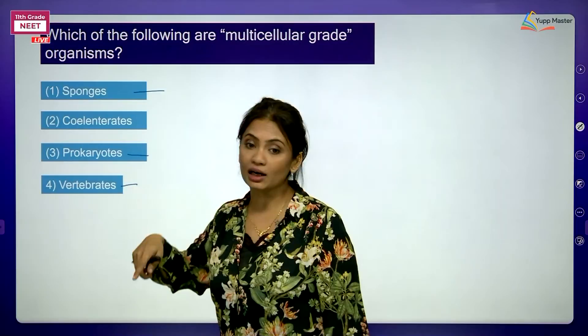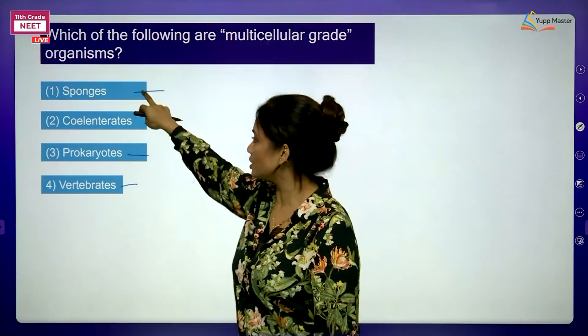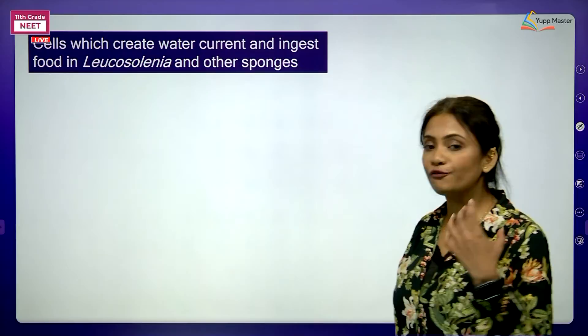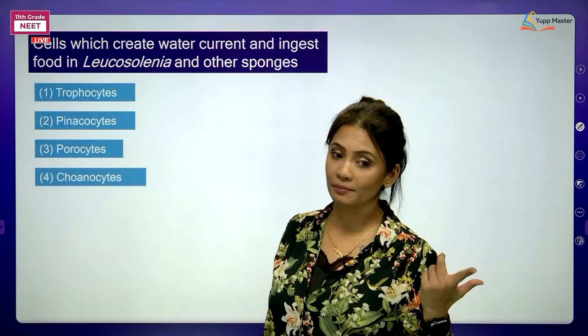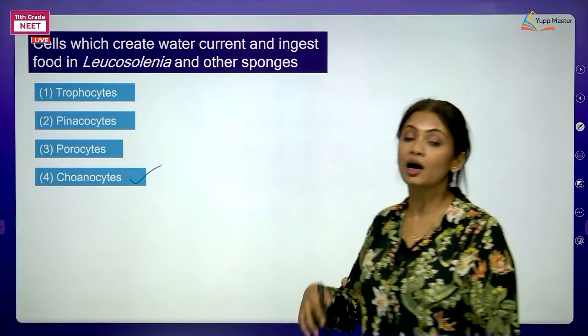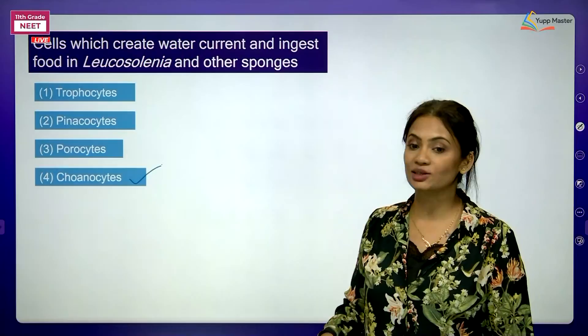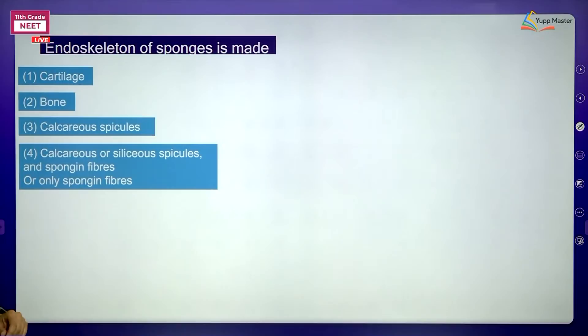Prokaryotes are unicellular. Vertebrates are at organ system level. Cnidaria like hydra and jellyfish are tissue level. But sponges remain only as cellular grade of organization. Next MCQ: cells which create water current and ingest food in Leucosolenia - wouldn't it be choanocytes? They create the current of water by beating their flagella upward, and they allow water with food to enter. That is why ingesting food is also a property of choanocytes.